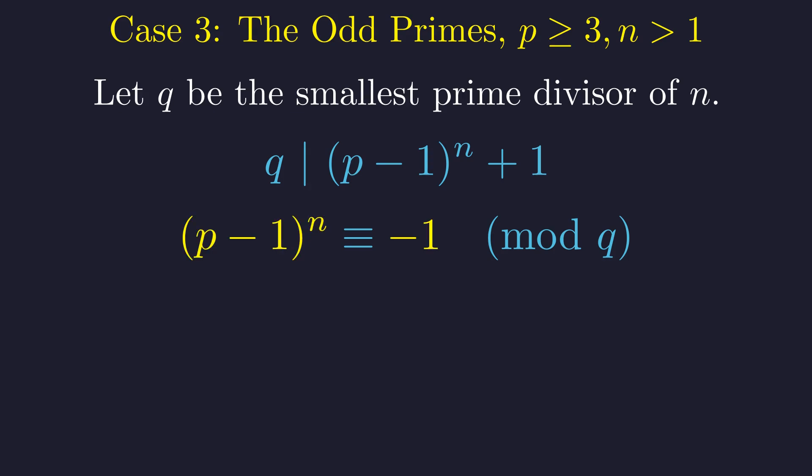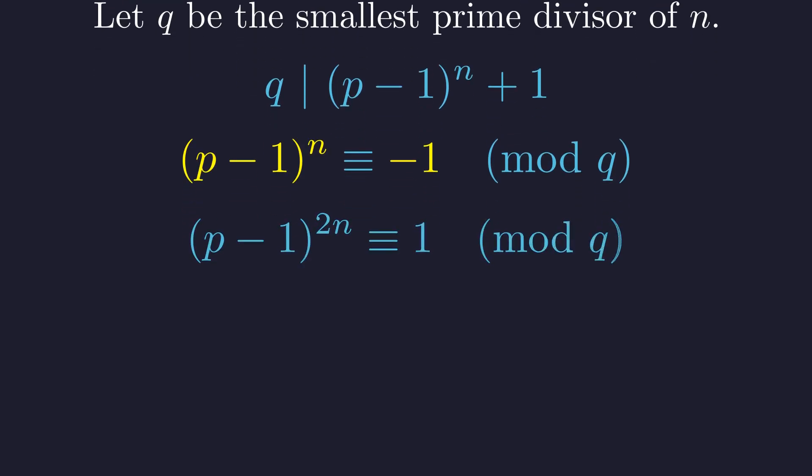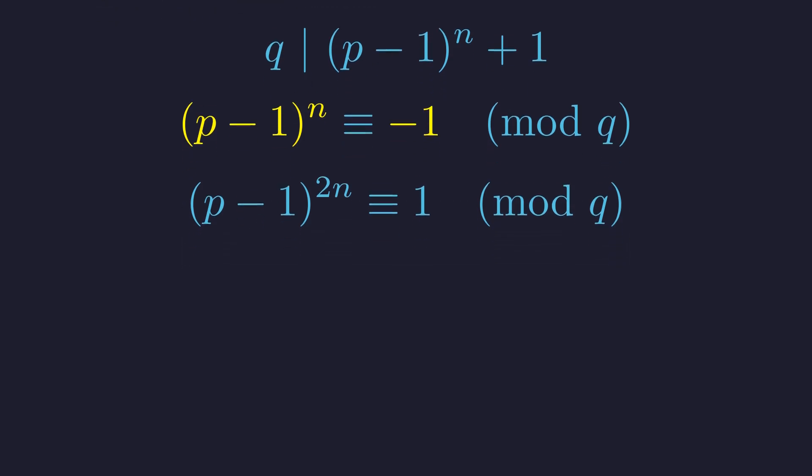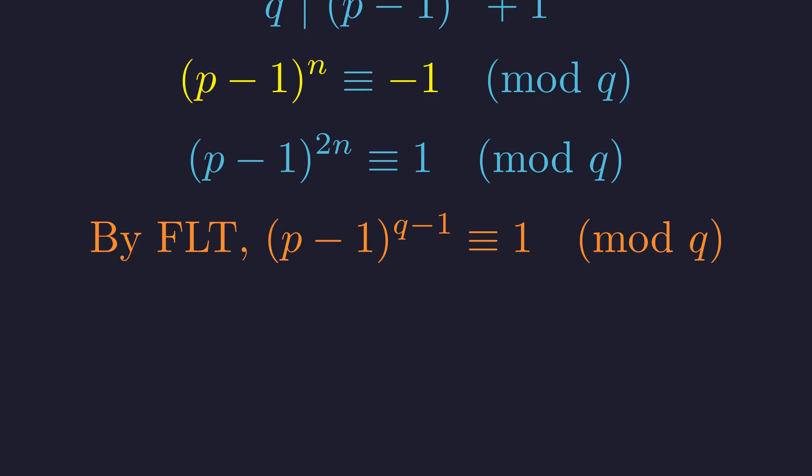To analyze this, we can square both sides of the congruence. This gives us (p-1)^(2n) ≡ 1 (mod q). This structure suggests the use of Fermat's Little Theorem, which relates powers of an integer to a prime modulus. By Fermat's Little Theorem, for any integer a not divisible by a prime q, we have a^(q-1) ≡ 1 (mod q).